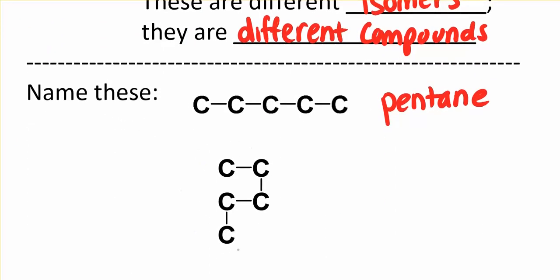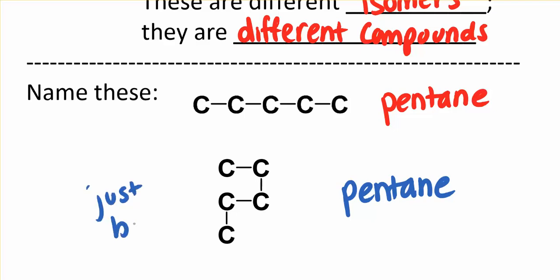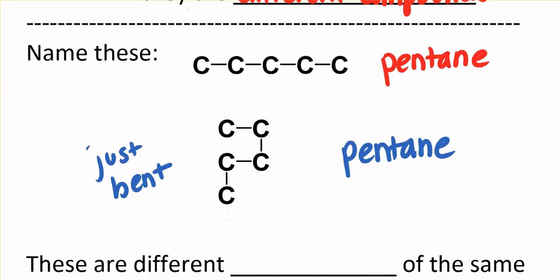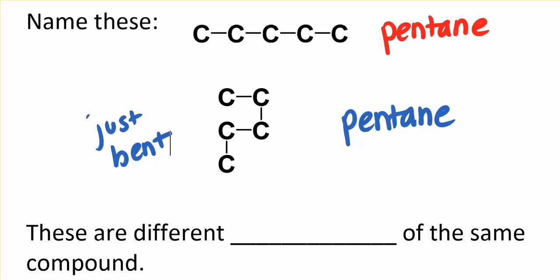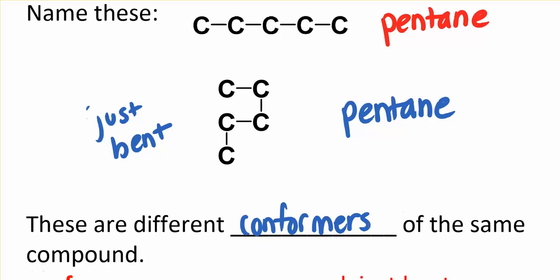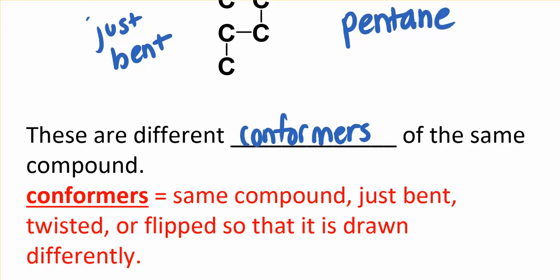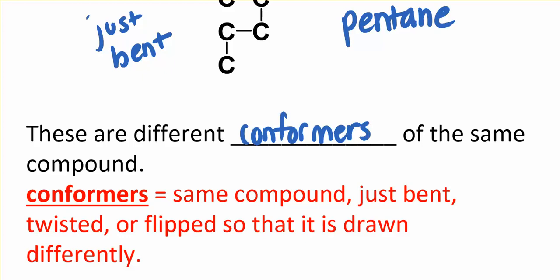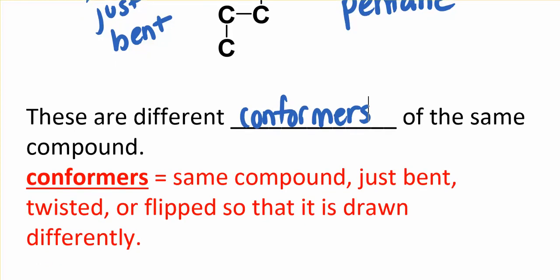What about this compound here? It's still pentane — it does not have a branch, it's just bent a couple of times. It's still five carbons in a row, even if it's not drawn in a straight row. These are the same compound but shaped differently, so we call them conformers — different conformers of the same compound. The definition: same compound, just bent, twisted, flipped, or drawn differently. One thing we want to get good at is identifying those.